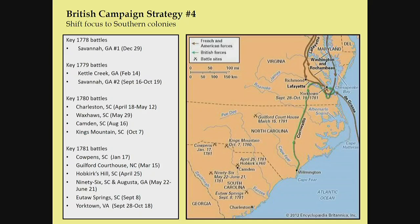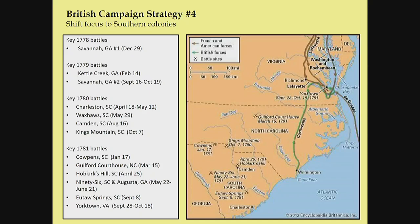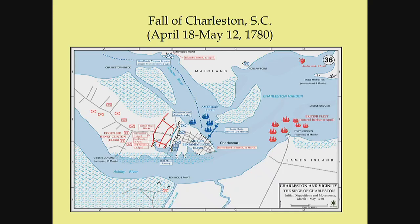If you lose a whole army in the South, you have to buy time for another army to be trained. What emerged were partisan guerrillas, primarily in the back country of South Carolina. The most famous is the Swamp Fox, Francis Marion, but there were others: Thomas Sumter, the Carolina Gamecock; Andrew Pickens of South Carolina; Elijah Clark of Georgia; and William Richardson Davie of North Carolina. These partisans gathered well-trained militia and used hit-and-run tactics to strike at British outposts, garrisons, and supply lines throughout the South — buying time for another Continental Army to confront Cornwallis and his professional troops.